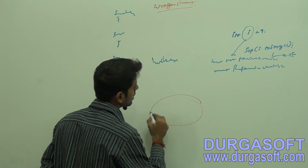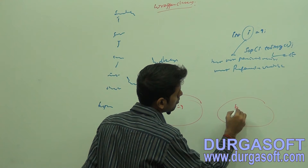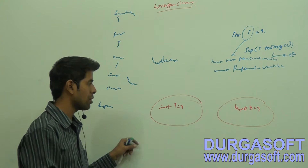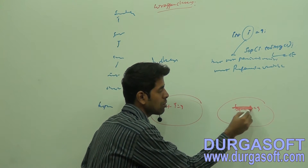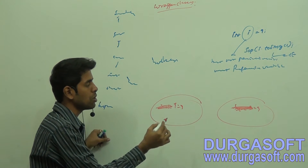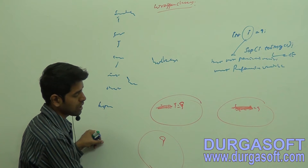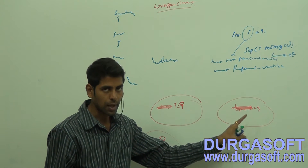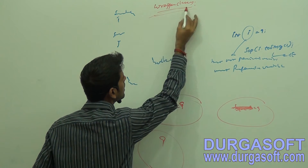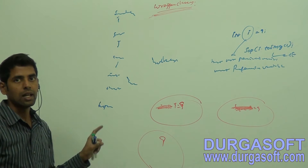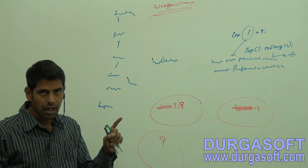For example, if it is like int i = 9 or byte b = 9, we are wrapping these primitive variables within an object. The literal value is what's important - we are wrapping a literal within an object. In order to wrap a particular literal within an object, we depend upon wrapper classes.